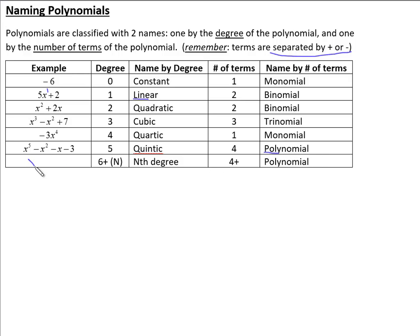Anytime we have something a sixth degree or higher — say we had something with x to the seventh plus 2x — anything higher than degree five, we just give a generic name like the nth degree. So if it's degree seven, we'd call this a seventh degree, and because there's two terms it would be a seventh degree binomial. So that's naming them.